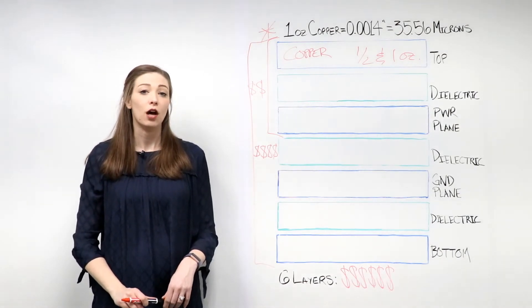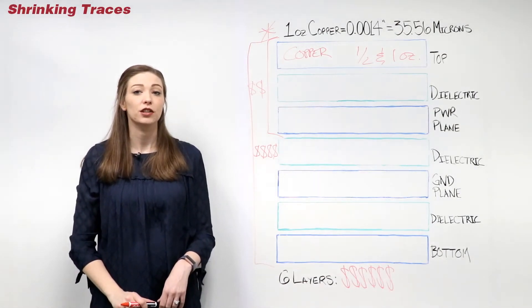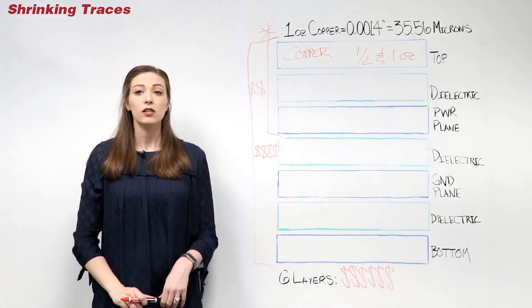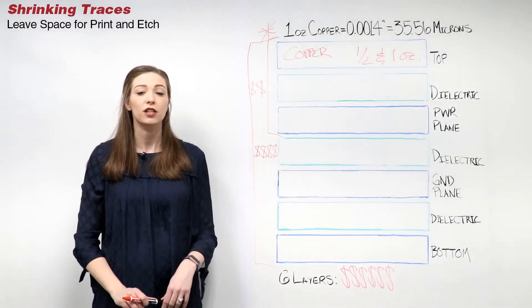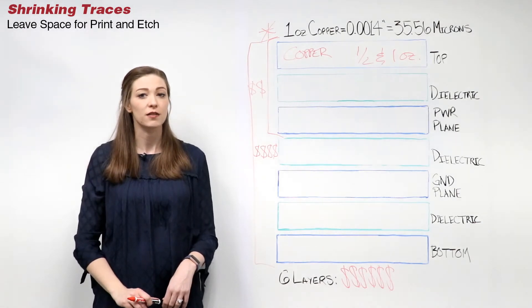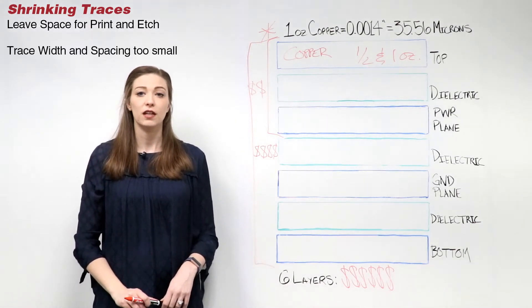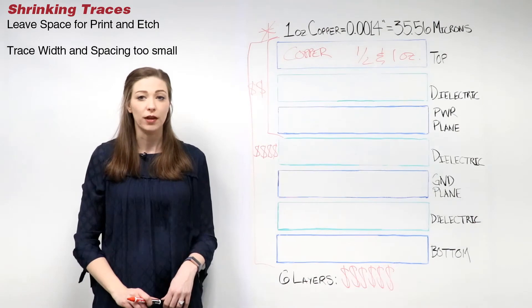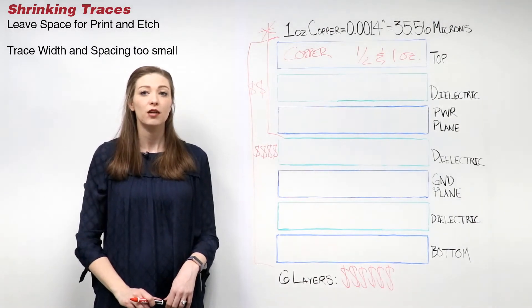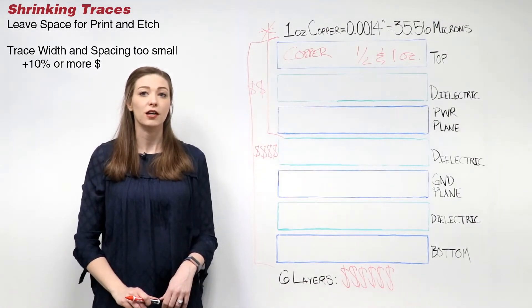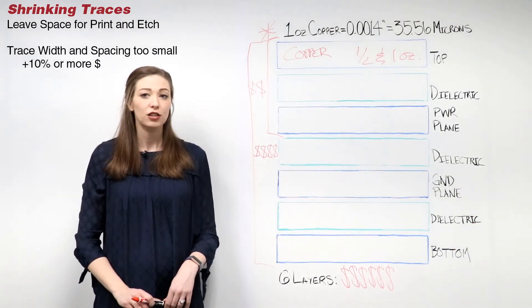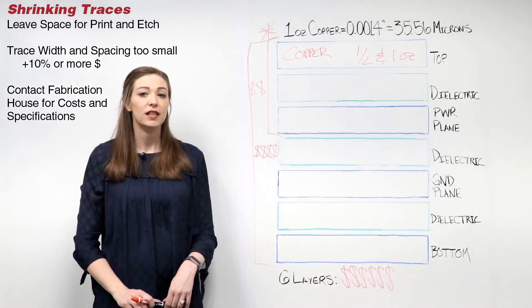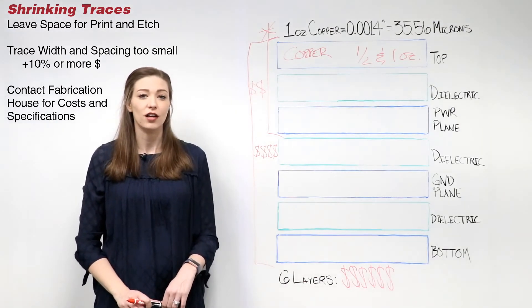In order to keep the layer count low, shrinking traces may be considered for your design. To keep costs low, leave as much space as possible between densely routed traces for the supplier's print and etch process. If the trace widths and spacing fall below the supplier's general capabilities, the supplier may need to impose a 10% or more cost adder to account for any scrapped PCBs during the manufacturing process. Contact your fabrication house for trace width and spacing capabilities and associated costs.